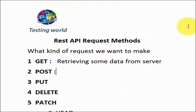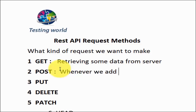Next is POST. We use POST when we are creating a new resource on the server. For example, if I have an application with customer details and I want to fetch a customer's detail, I use GET. But if I want to add a new customer to the server, I use POST — whenever we add new data or a new resource to the server.